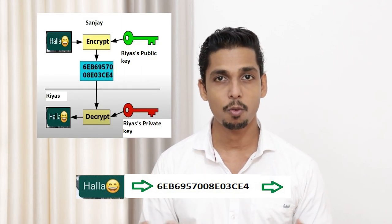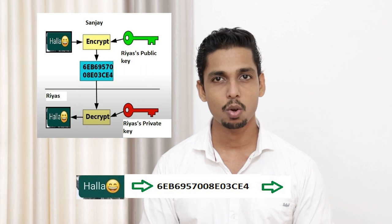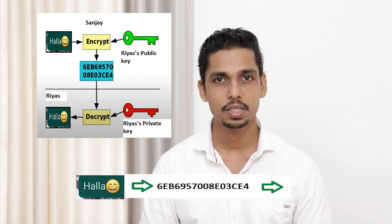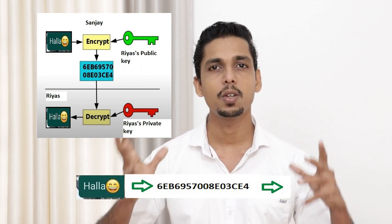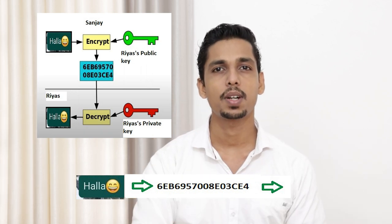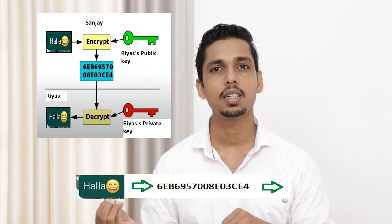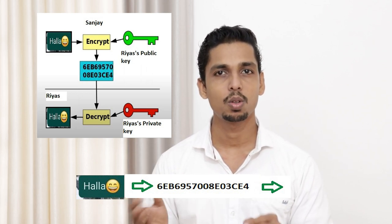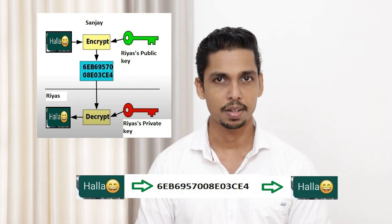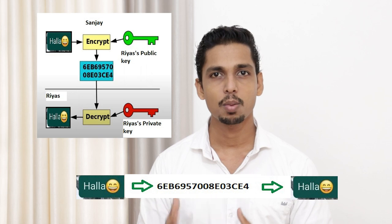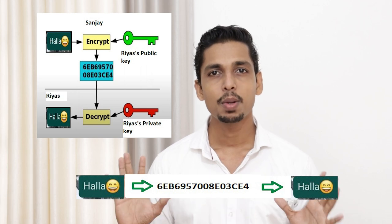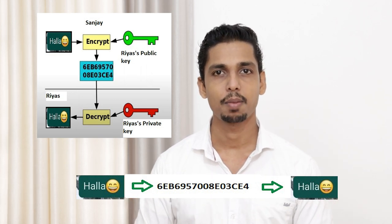We are sending a message via encryption. The message is transferred and broadcast. When we send on WhatsApp, we send a message that becomes ciphertext. Then the receiver decrypts it. This is decryption. This is an example of cryptography.